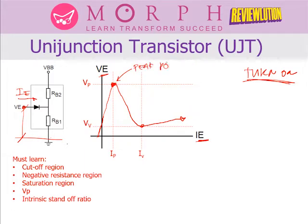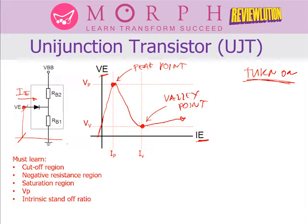Below the peak point, there is no significant increase in emitter current IE. This region, below the peak point, is referred to as the cutoff region of the UJT.